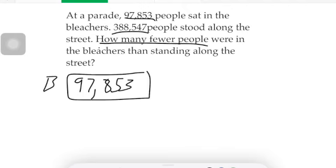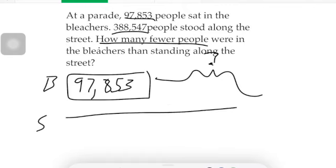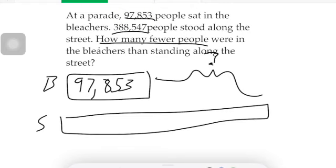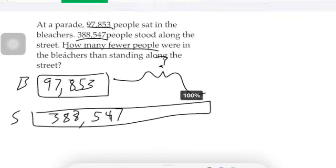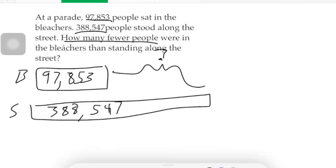This right here is our unknown. Standing — that's a heck of a lot of people — that's all of that together, and that was three hundred eighty-eight thousand five hundred forty-seven. What do we need to do? What is our process?